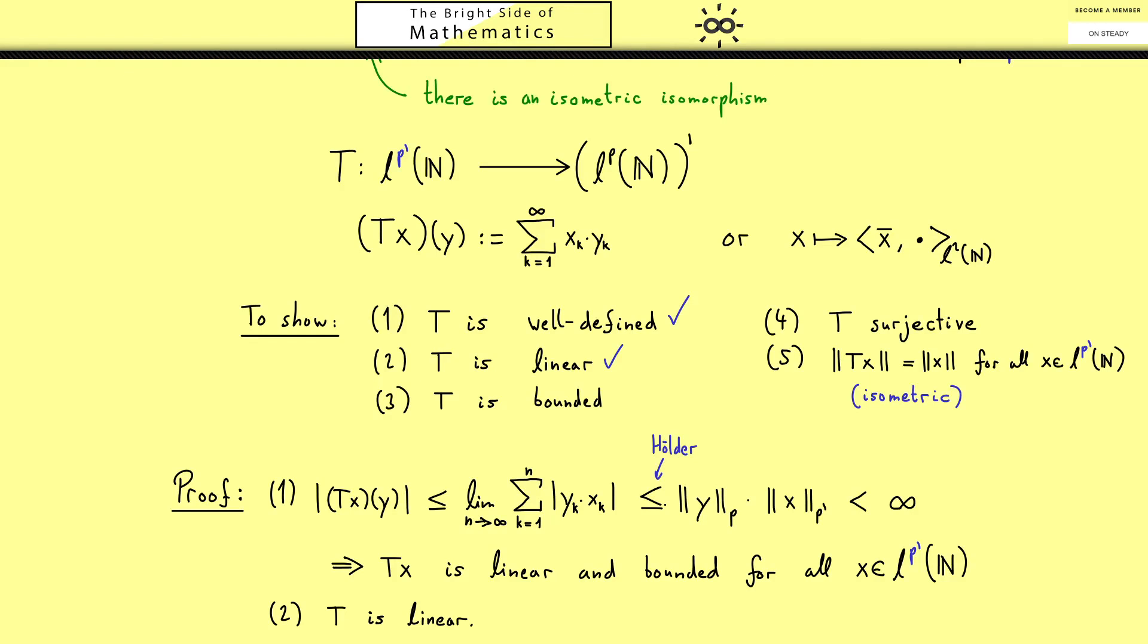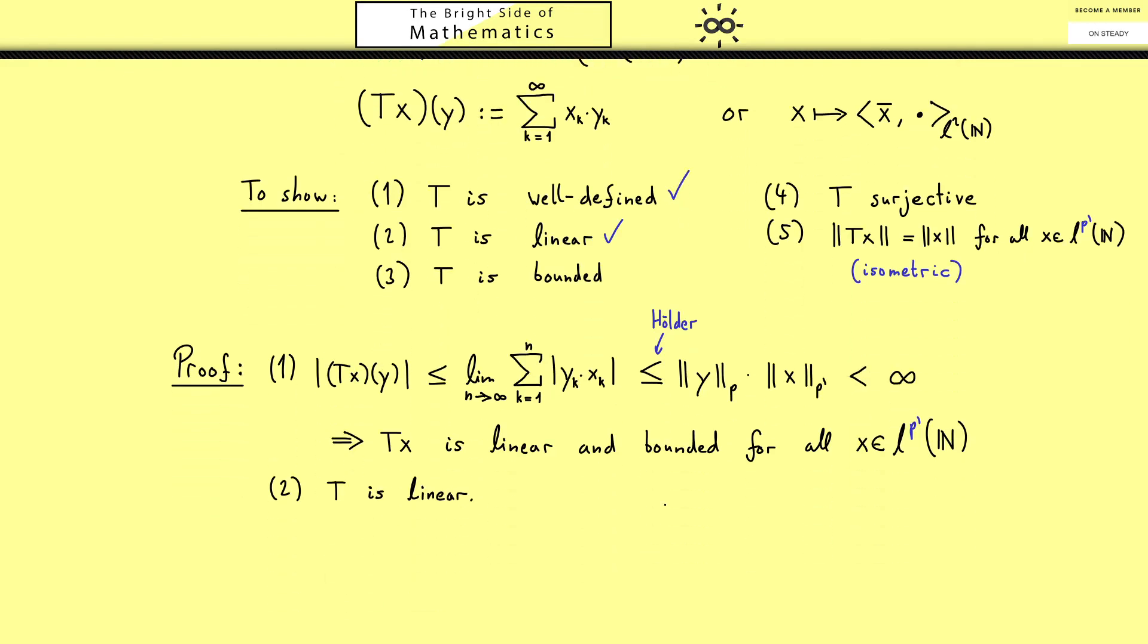Of course this part is almost done with Holder inequality from before but still let's write it down. The norm of Tx is the norm in LP prime which means the operator norm. By definition this is just a supremum of this set where we put in all vectors y with norm 1. Using what we have done before with Holder's inequality we know this is less or equal than the two norms multiplied.